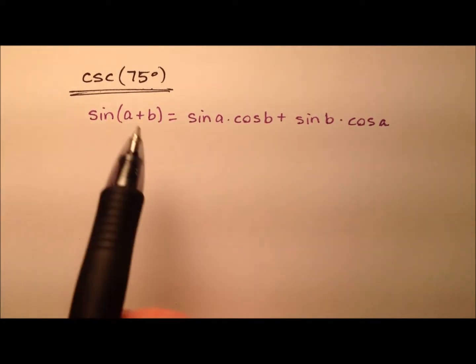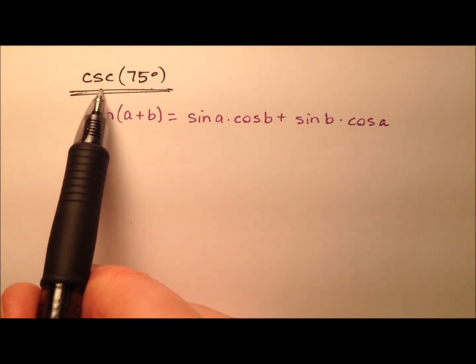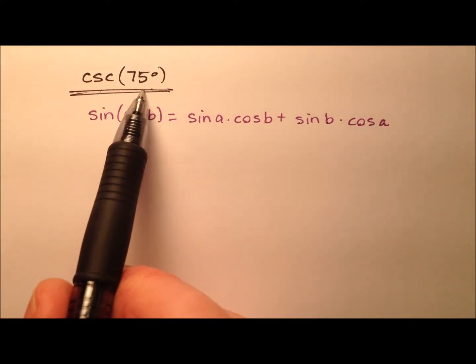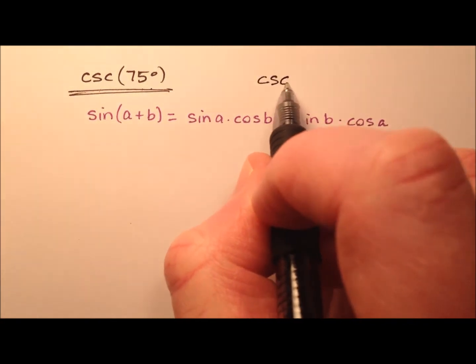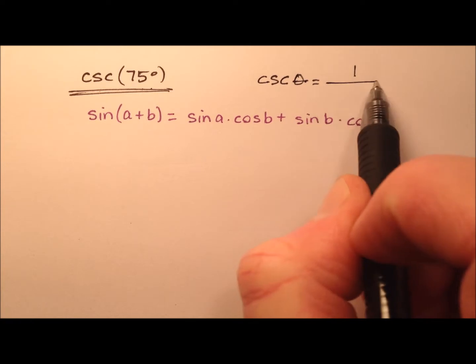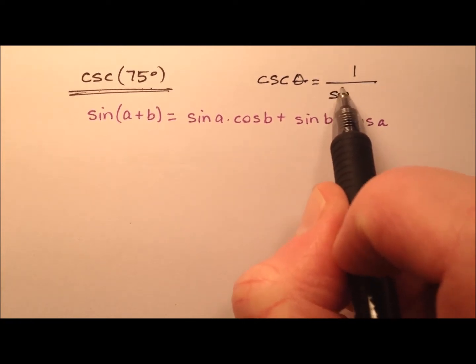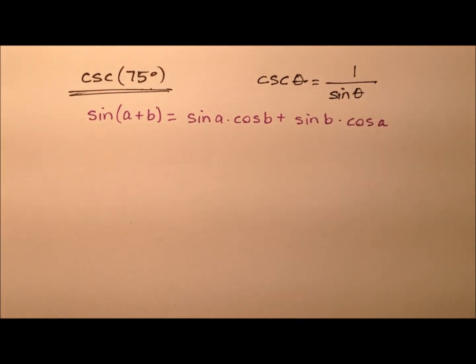Remember that cosecant is considered a reciprocal function, and its reciprocal counterpart is sine. So that means the cosecant of some angle theta will be equivalent to 1 over the sine of that angle theta.